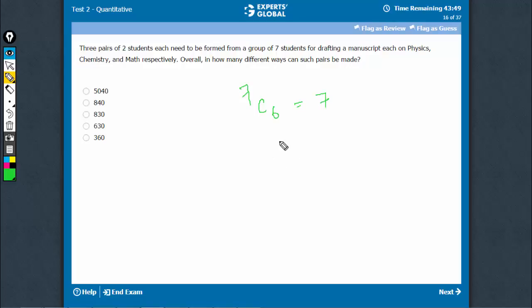And now, the six students selected have to be divided into three pairs. So, how can this be done?